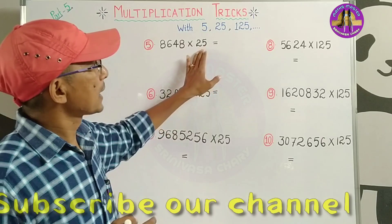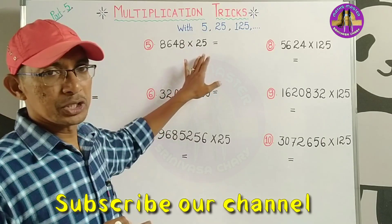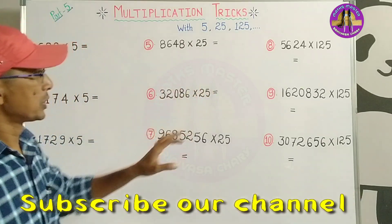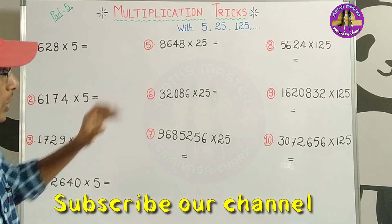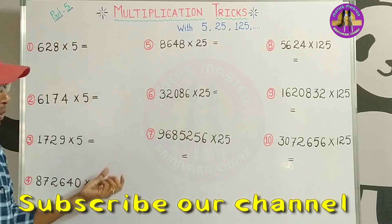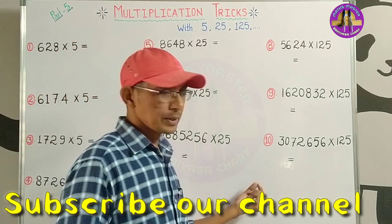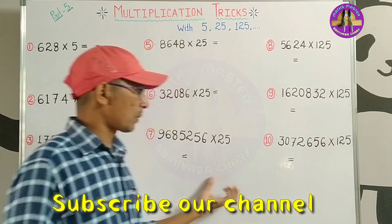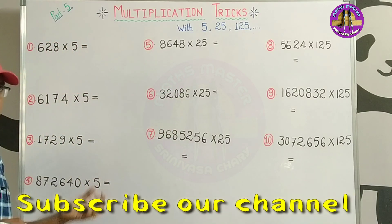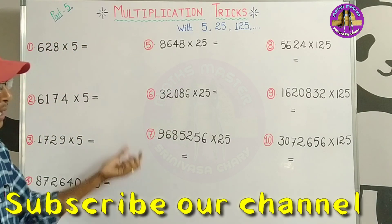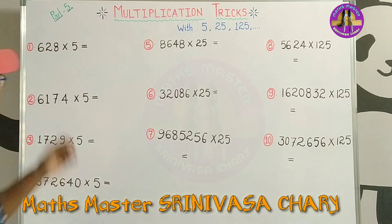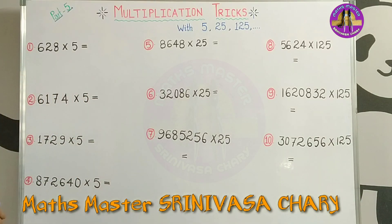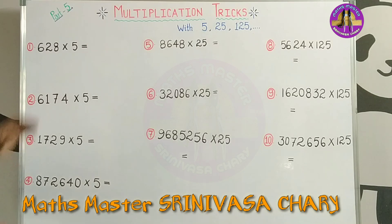In this video, we will discuss direct multiplication. We will discuss 10 problems. We will skip the last step. First problem is 628 into 5. We will discuss the 5 multiplication.